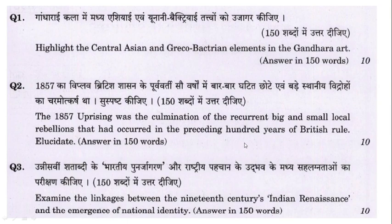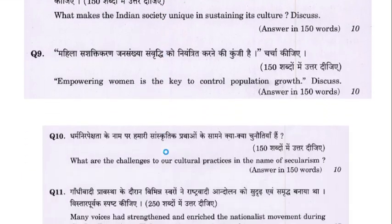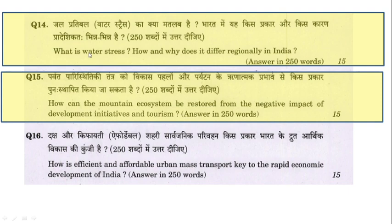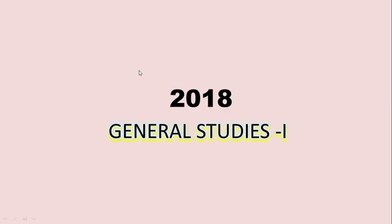In GS1 of 2019, environmental questions included: 'Assess the impact of global warming on coral life systems with examples.' 'Discuss the causes of depletion of mangroves and explain their importance in maintaining coastal ecology.' 'What is water stress? How and why does it differ regionally in India?' 'How can the mountain ecosystem be restored from the negative impact of development initiatives and tourism?' 'How do ocean currents and water masses differ in their impact on marine life and coastal environment?'